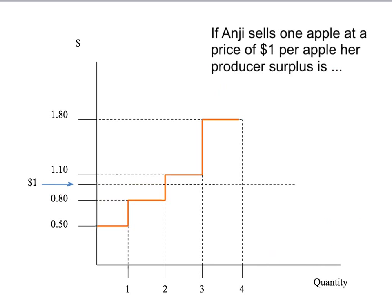But what would happen if the government had a rule in place that said Anji was only allowed to sell one apple? What would Anji's producer surplus be if she only sells one apple at a price of a dollar per apple? Notice that in that case, Anji is not selling on her supply curve. Her supply curve tells us she would like to sell two apples at a dollar per apple, but there's a government rule that says she can only sell one apple. Her producer surplus is still the area under the price of a dollar, above the supply curve, up to the one apple that she's allowed to sell.